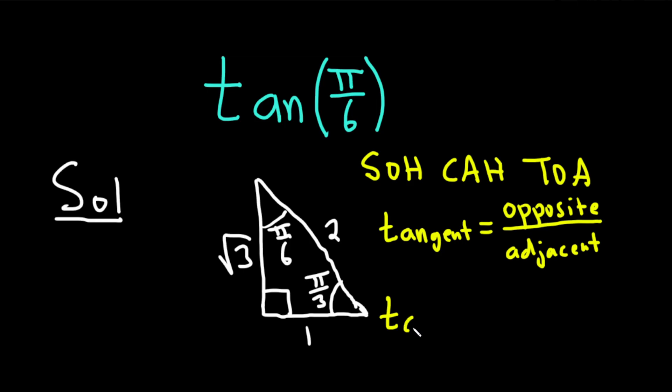So for us, we have the tangent of pi over 6. So SOHCAHTOA, it's going to be O over A, so opposite over adjacent. So looking at pi over 6, opposite is going to be 1. That's the side that's opposite the angle, pi over 6. And the adjacent side is the square root of 3. So it's just 1 over the square root of 3.